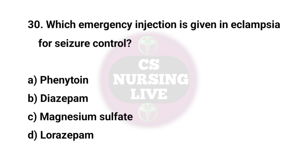Question No. 30. Which emergency injection is given in eclampsia for seizure control? Right answer is C. Magnesium sulfate.